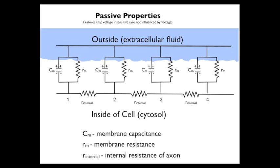There are three components of significance. The first is labeled CM, which stands for membrane capacitance — the membrane is actually the equivalent of an electronic component called a capacitor. The second component is the membrane resistance, which refers to how difficult it is for current to flow through the ion channels in a membrane — essentially, how many ion channels are open. I will explain both in greater detail in just a few moments.